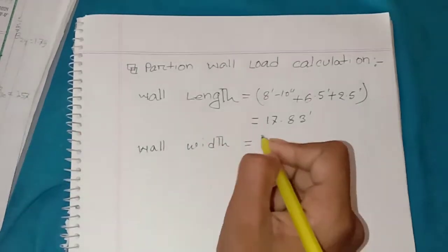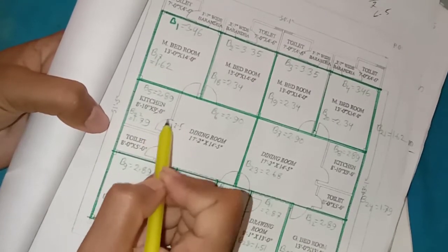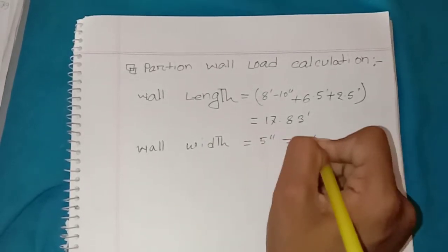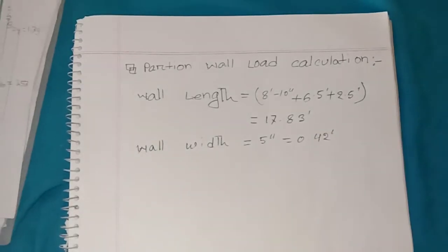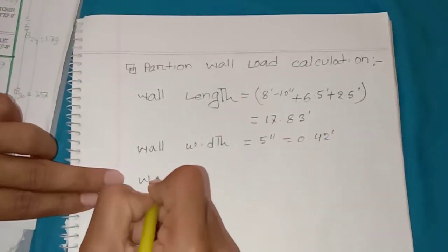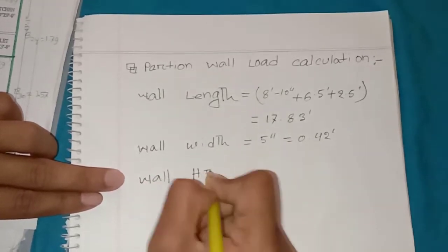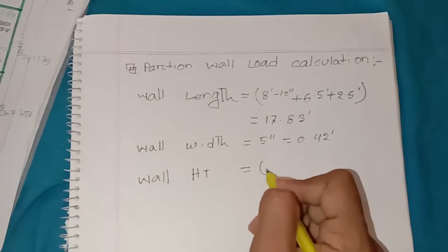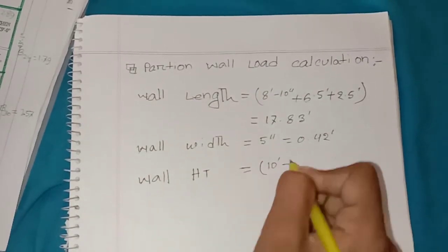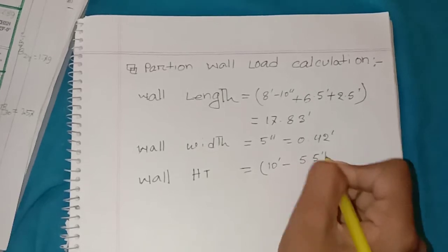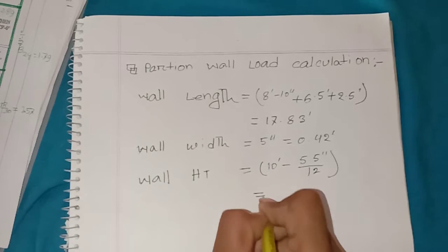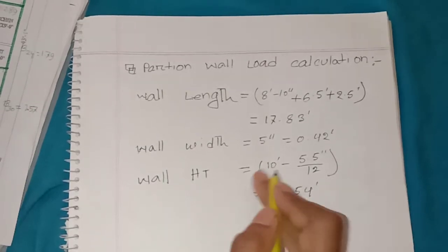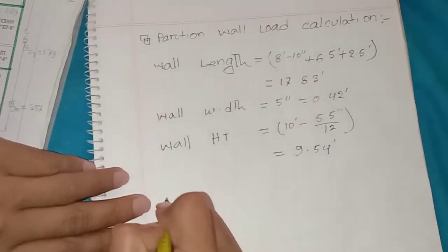Next, the wall width. We're using a 5 inch partition wall, which is 0.42 feet. For wall height, the slab to slab height is 10 feet, but we'll subtract 6 inches, giving us 9.54 feet as our wall height.